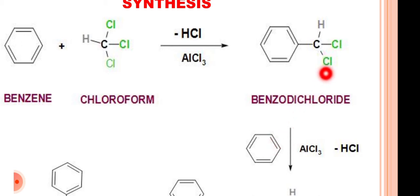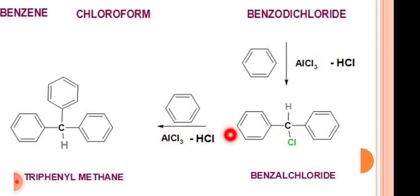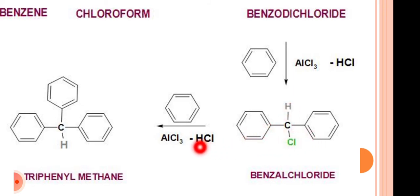The hydrogen is given by the benzene ring and one Cl from benzodichloride, giving the formation of benzhal chloride, which is also called diphenylchloromethane. This diphenylchloromethane is then again reacted with a molecule of benzene in the presence of aluminium chloride.